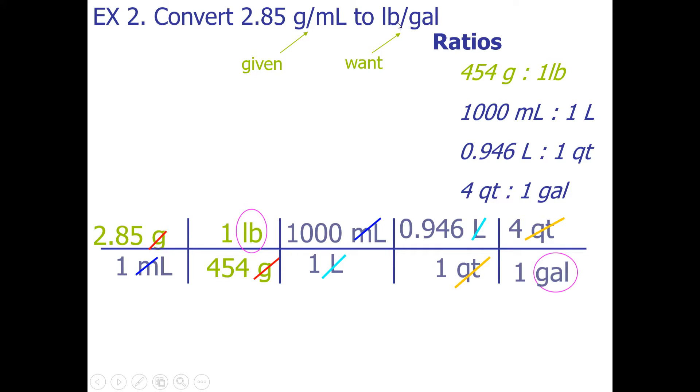Let's proceed with the numerical calculation. I'm going to type it in from left to right. I have 2.85 divided by 454 times a thousand times 0.946 times four. I skipped all the ones because anything multiplied and divided by one is itself.